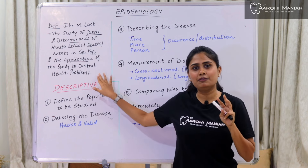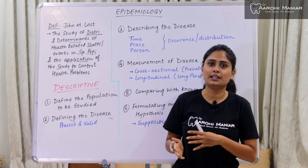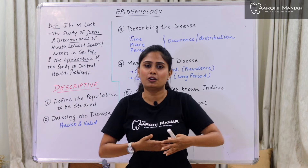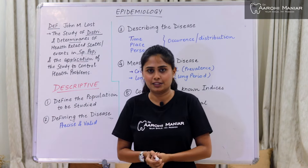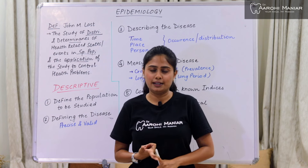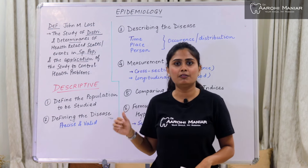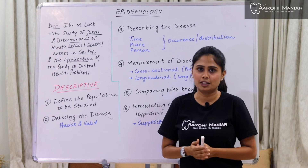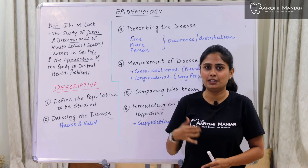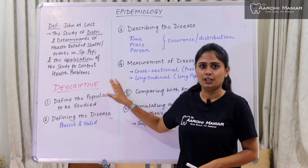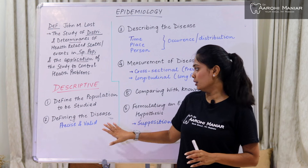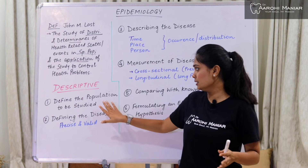Basically we have three studies in epidemiology which can help us go about with all these processes of health related events. The three are descriptive, analytical, and experimental. Today we are just going to go about with the descriptive. In the upcoming videos we will talk about analytical and experimental epidemiological studies. In descriptive there are six points that we have to learn so that we will be able to write the answers.